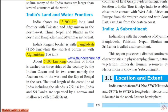The total coastline including islands is 7,516 km. The mainland coastline is 6,100 km. India is bounded on three sides by the sea — the Indian Ocean, the Arabian Sea and the Bay of Bengal. The Palk Strait separates India from Sri Lanka.